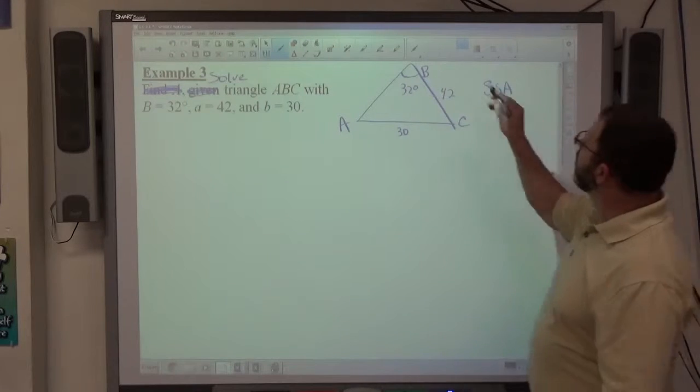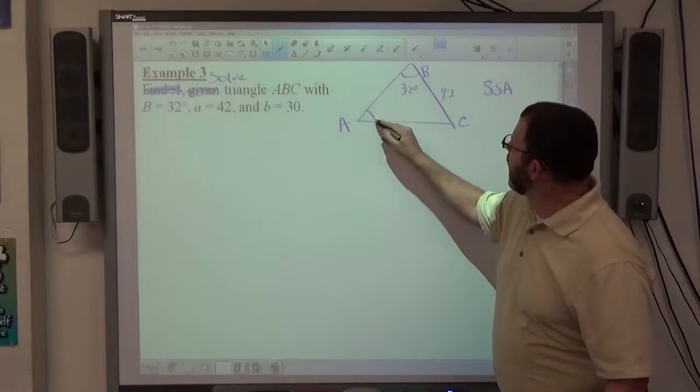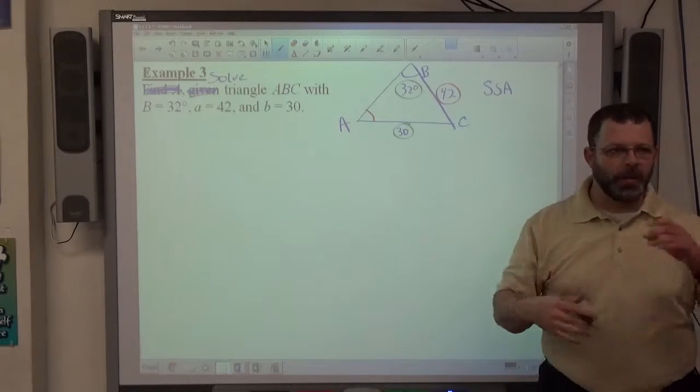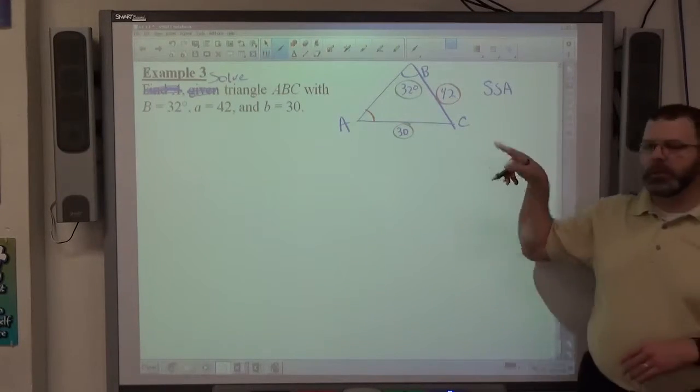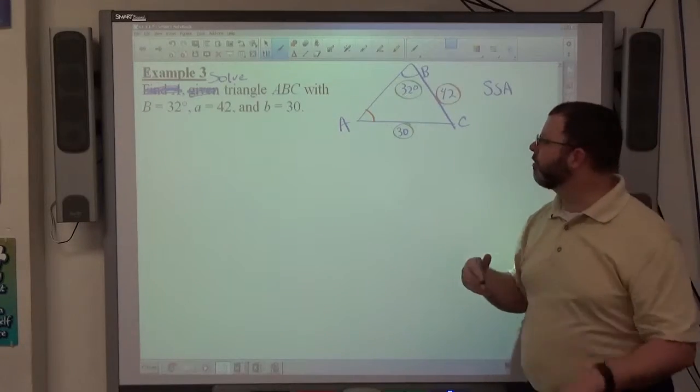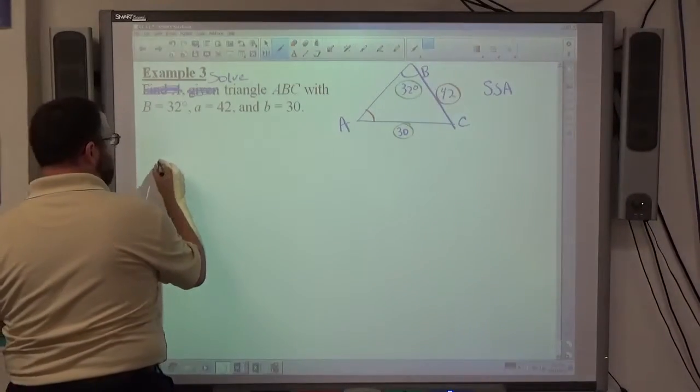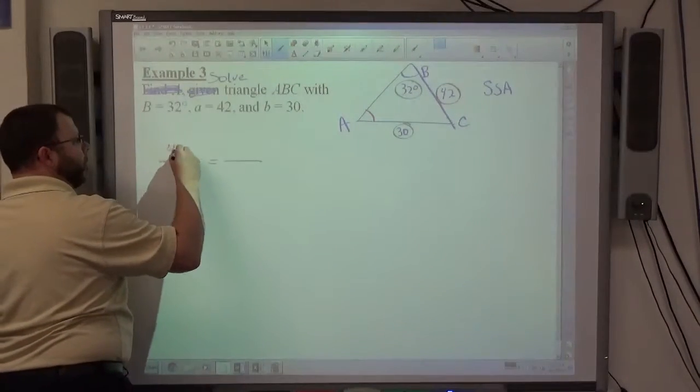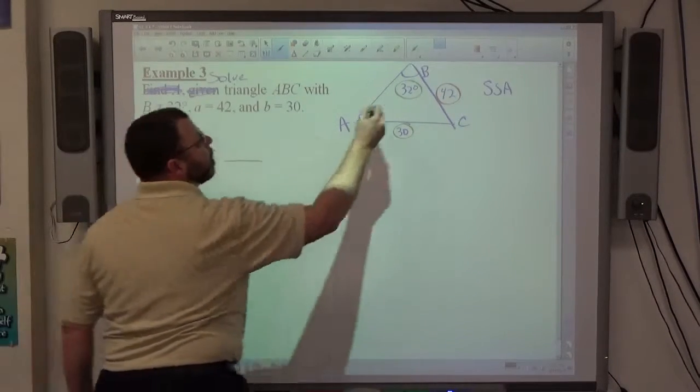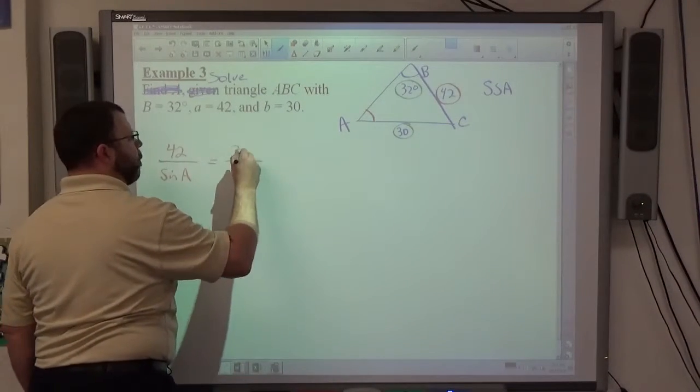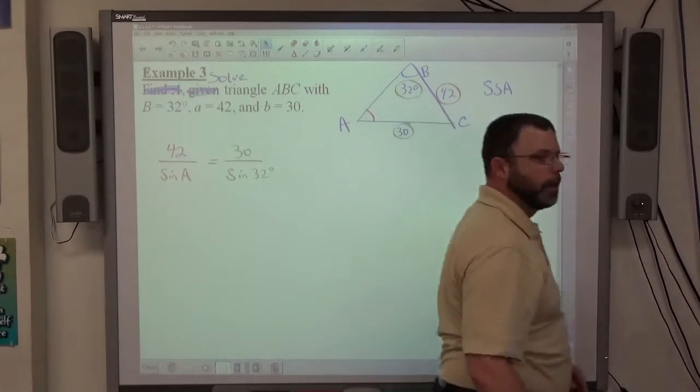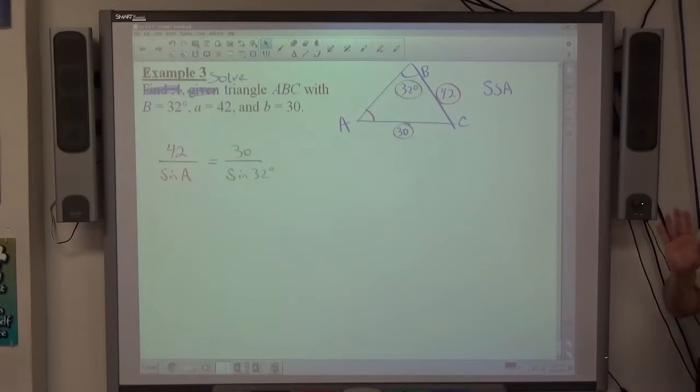It's the side-side-angle scenario, which means that I've got angle A opposite side A, and angle B opposite side B are going to help me find out what angle A equals. So the three pieces of information I've given, I can immediately go on to find out what angle A is. So I create my law of sines proportion here, I'm going to get 42 over sine of A is equal to 30 over the sine of 32.